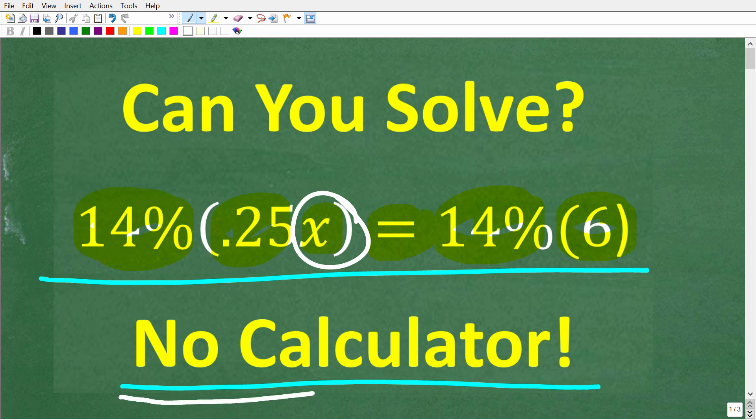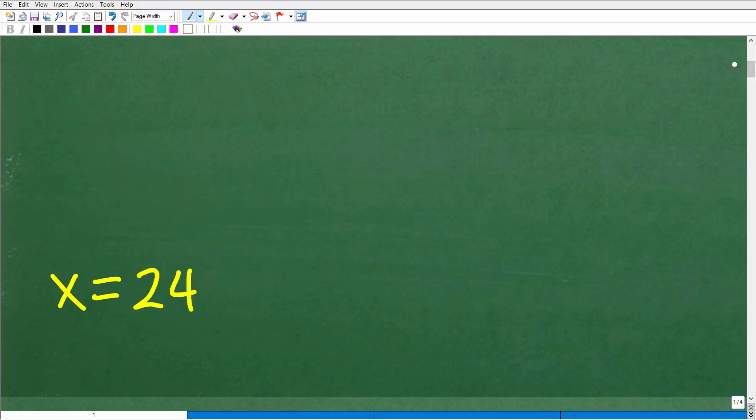Once again, no calculators. I'm going to show you the correct answer in just one second, and of course, I'm going to solve this problem step by step. So one more time, we have 14% of 0.25x is equal to 14% of 6. Let's see what x is equal to. Well, x is equal to 24.